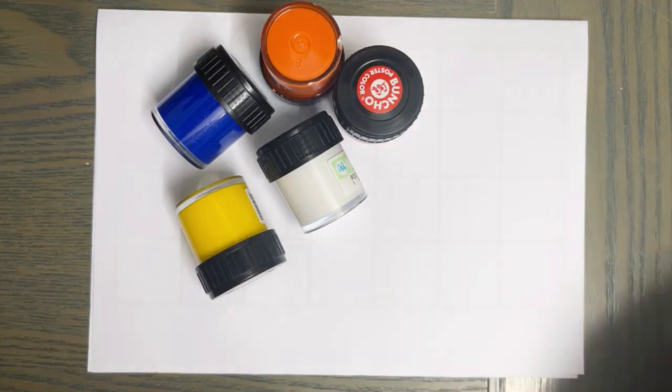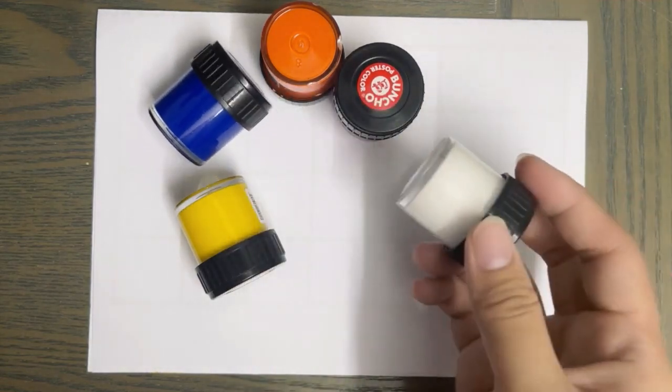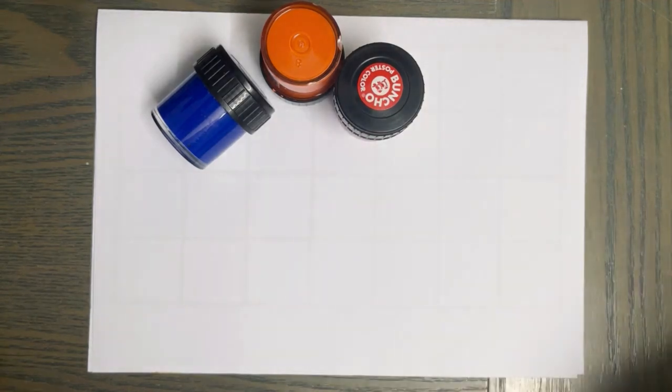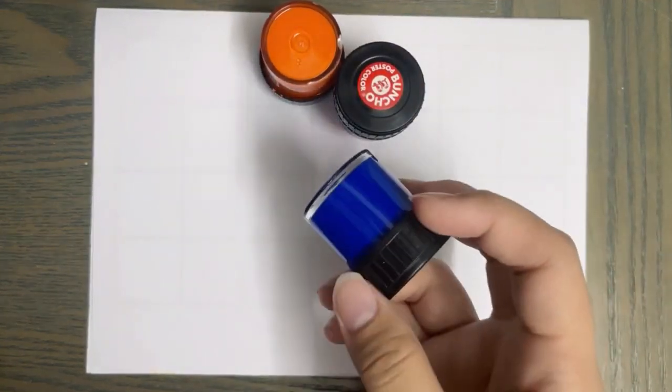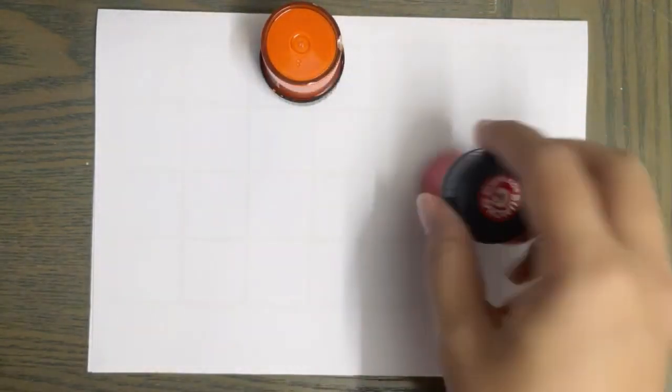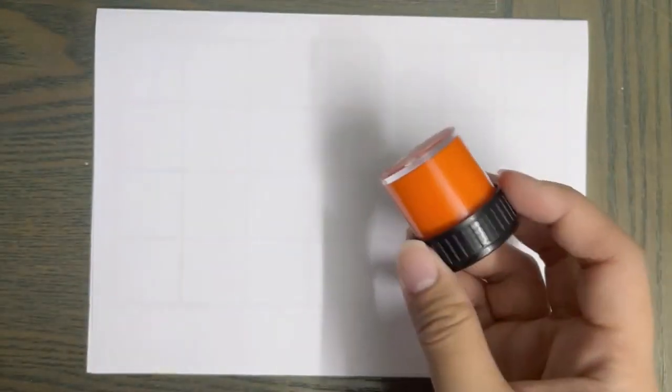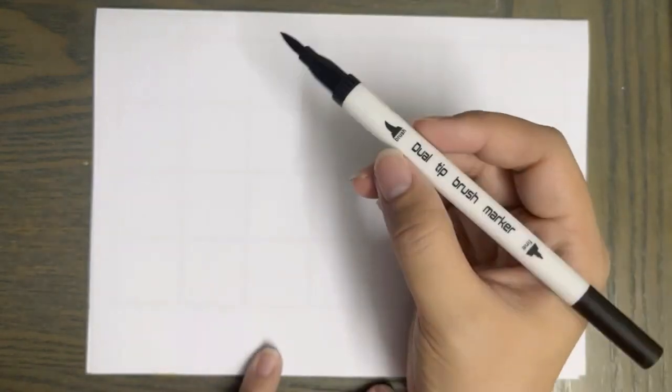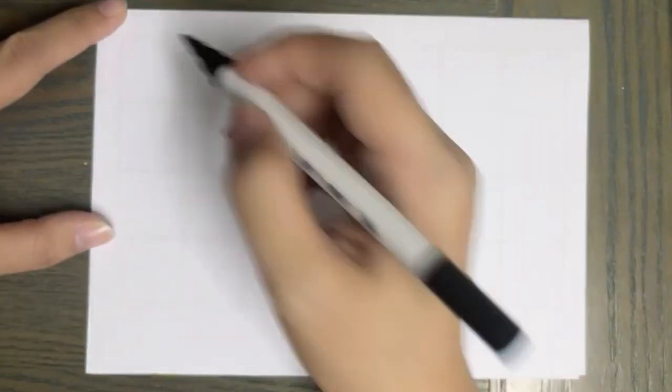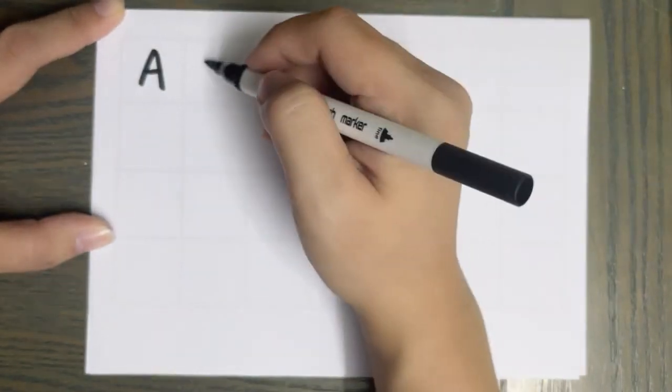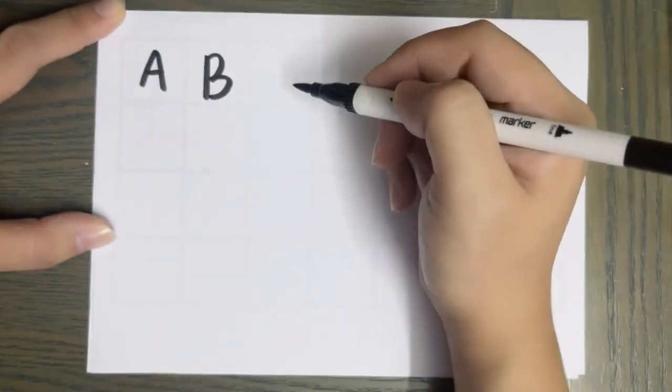Green color, white color, yellow color, blue color, red color, orange color, black color. A, A for apple. B, B for ball. C, C for cat. D, D for dog.